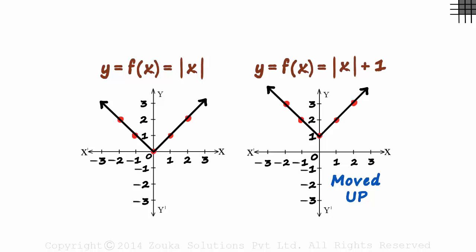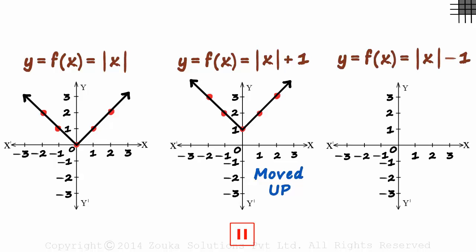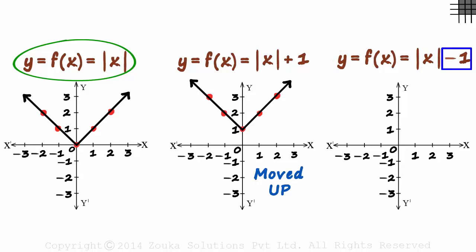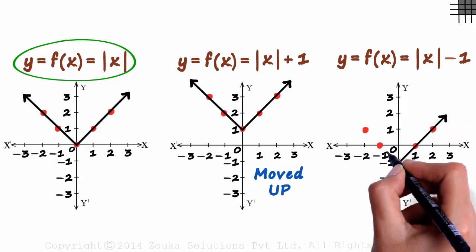Will the graph move down if we subtract a constant from the function? Look at the next function and try plotting its graph. Here we have subtracted one from the original function f of x equal to the absolute value of x. If x is zero, y will be minus one — we mark the point zero comma minus one. If x is one, then y will be zero. One comma zero is another point, two comma one and so on. If x is minus one, then y will be one minus one which equals zero. Minus one comma zero will be that point, and similarly minus two comma one will be another. Joining the points, the graph will look like this.